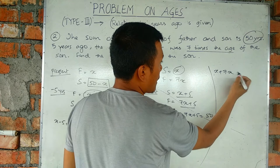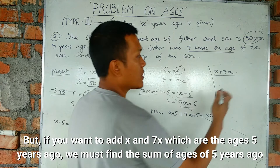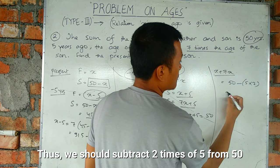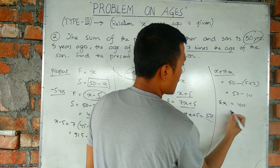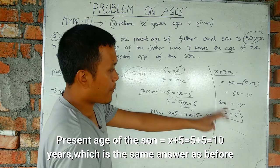Five years ago, subtract 5. 50 minus 10 equals 40, so 8x equals 40, x equals 5. The present age of the son is x plus 5, which equals 5 plus 5 equals 10.